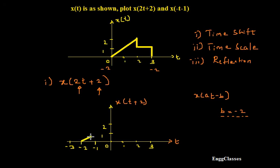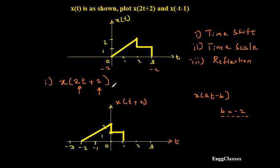The shape of the signal is going to remain the same — the only change is it is going to get shifted to the left. This is how the time-shifted version x of t plus 2 looks like.